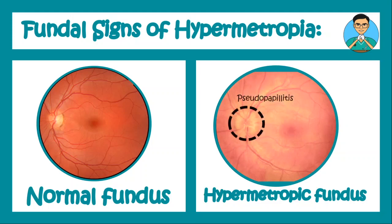An important fundal sign of hypermetropia is pseudopapillitis. Papillitis means an inflamed or edematous optic disc — due to edema, the margins of the optic disc become blurred. But in hypermetropia, the eyeball is very small, so the optic disc margins are difficult to appreciate and appear hazy or blurred even though there is no edema and hence no true papillitis — it merely appears like papillitis, hence called pseudopapillitis.